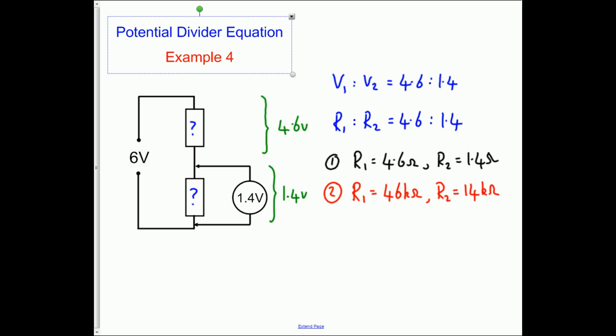Or we could choose another set of values. We could double them. We could say R1 could be 92k and R2 could therefore be 28k. That would work. Or we could keep the same ratio and we could halve them. We could make them 23k and we could make R2 7k. That would also work.